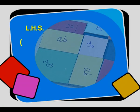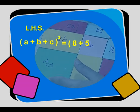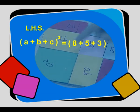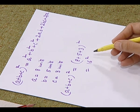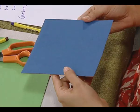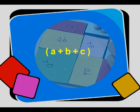First of all, we will represent the left hand side of this identity. The left hand side is (a + b + c)², which equals (8 + 5 + 3)² = 16². For representing (a + b + c)², we will take a square cut out of dimension 16 units. This square cut out will represent (a + b + c)².